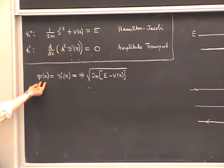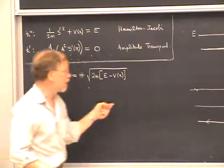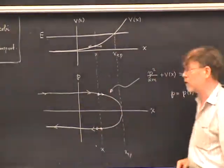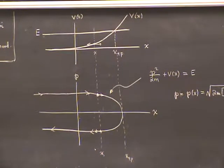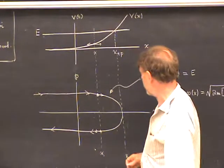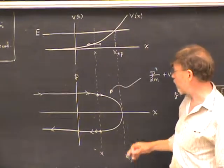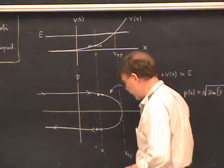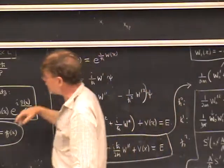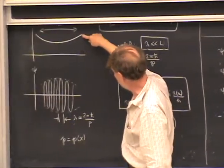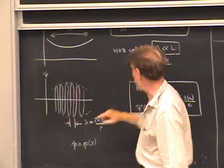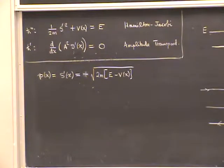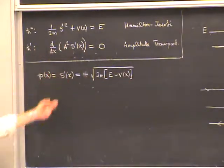So the local momentum connected with the local de Broglie wavelength in the WKB wave function is exactly the same as the momentum of a classical particle moving on the given potential, with two signs plus and minus. That's the interpretation of p(x). You can see that the de Broglie wavelength will be shorter where the momentum is higher (higher velocity) and longer as the particle slows down.